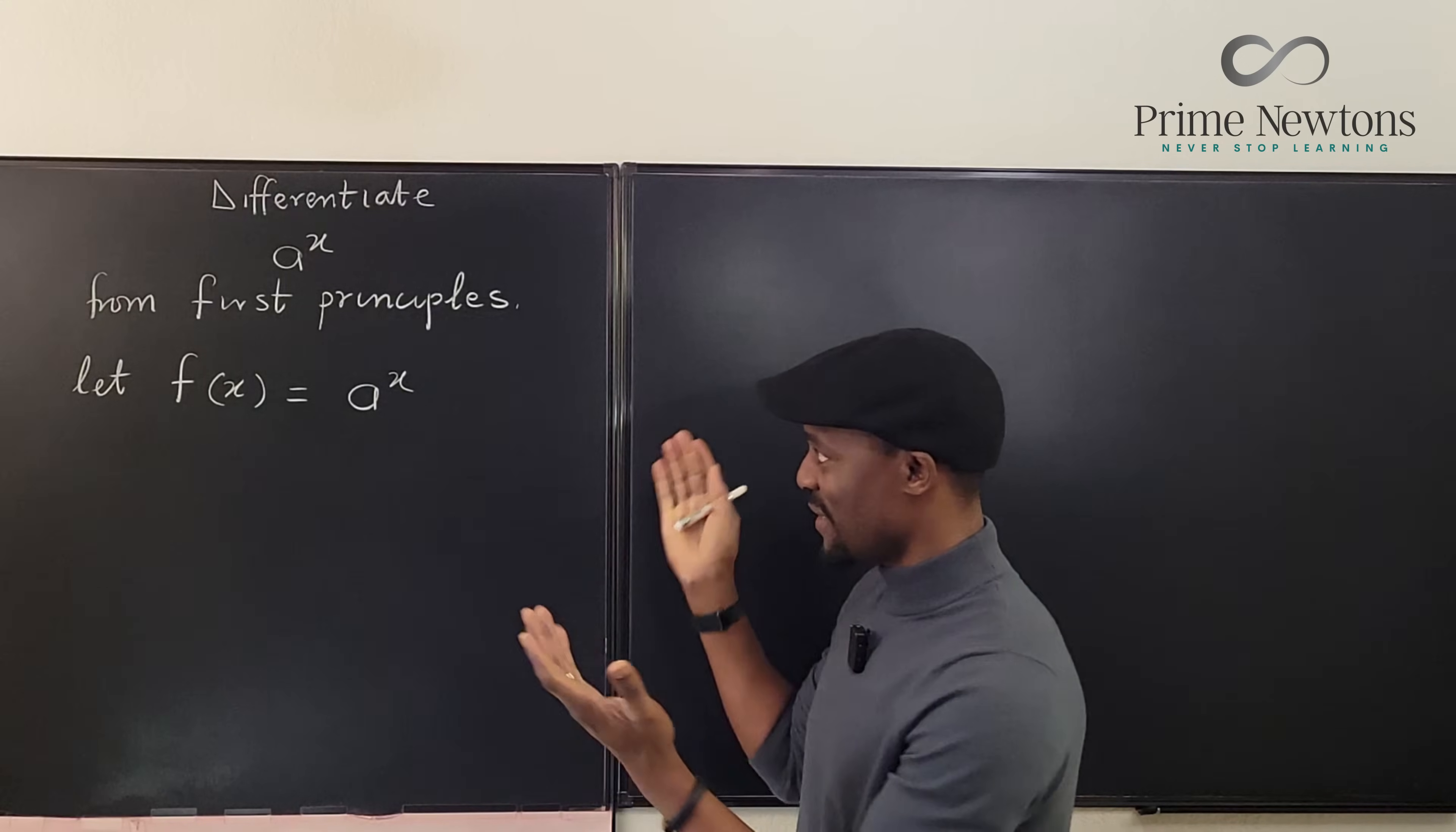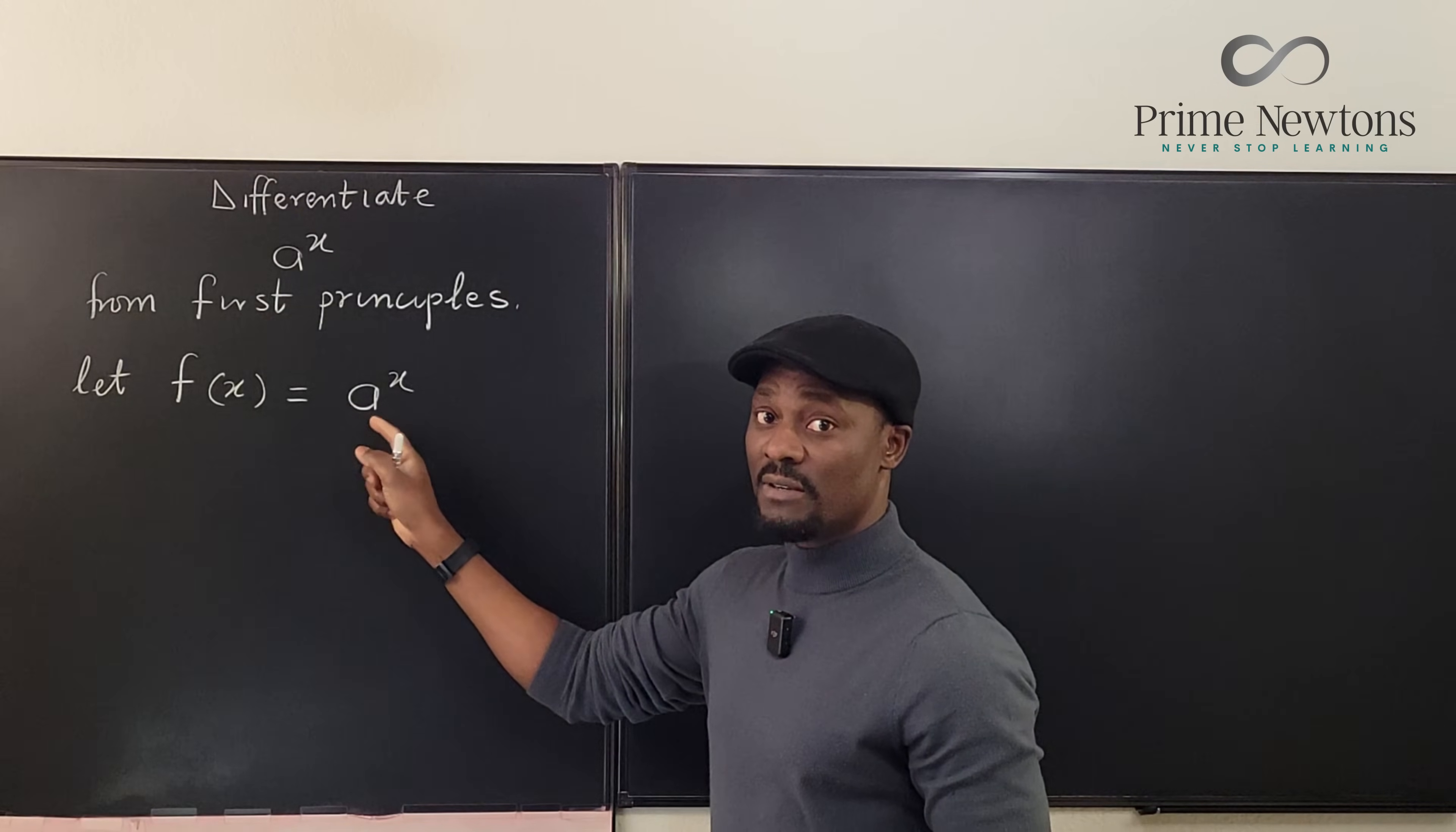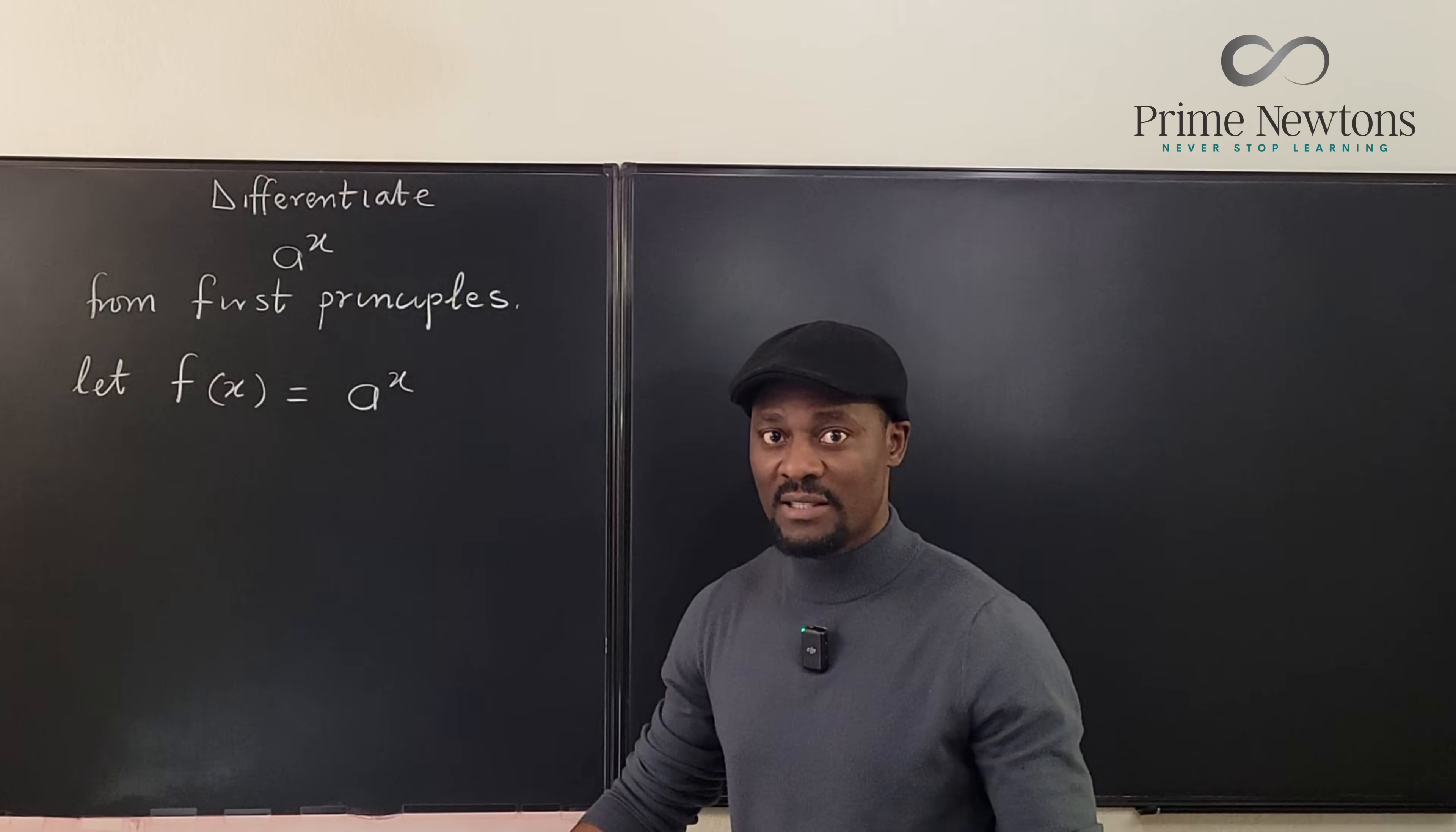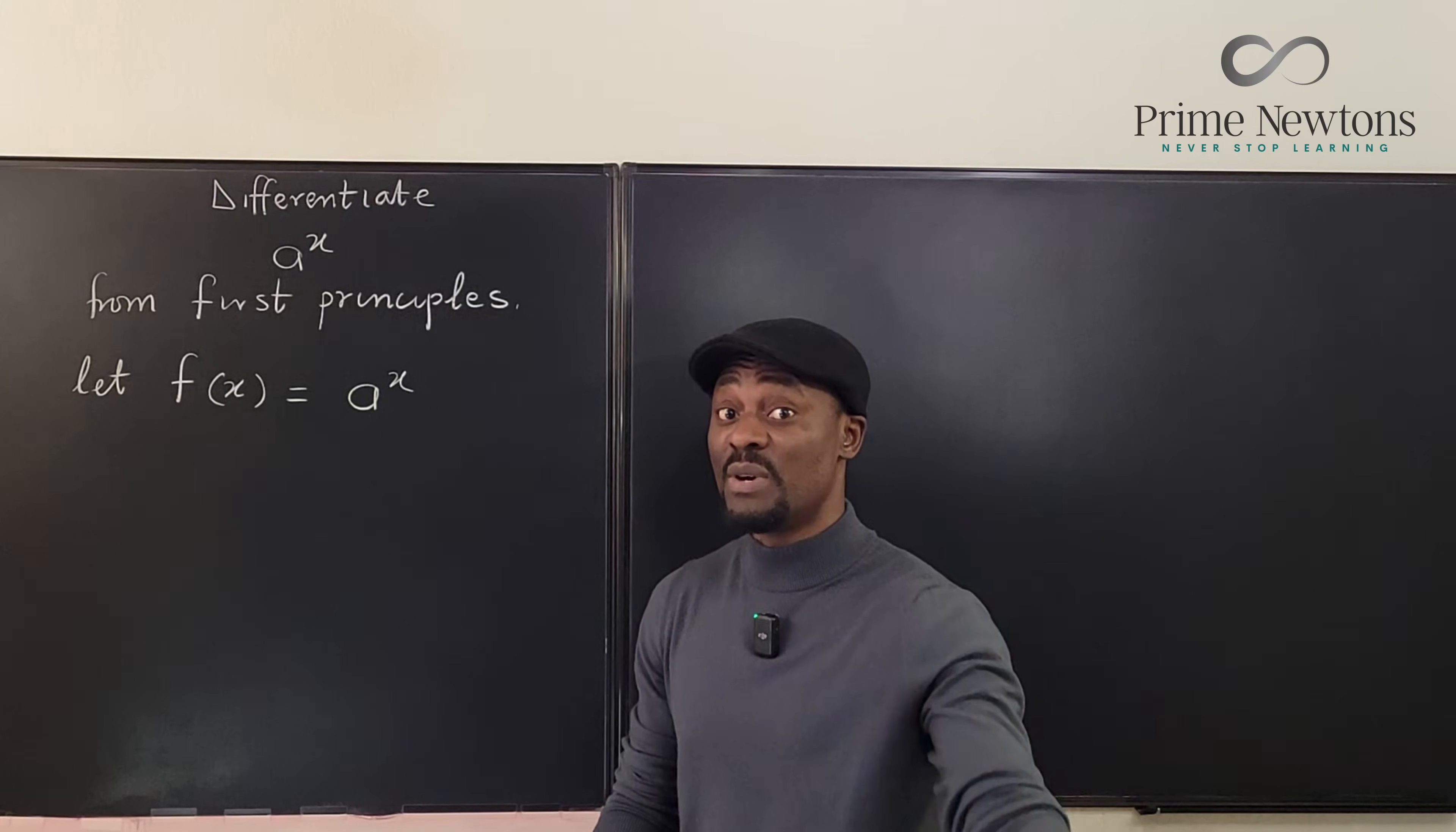I'm just going to do it because we know that if this is e then the derivative of e to the x is just e to the x. But what about this one? It's not e. What's going to be the derivative from first principles?